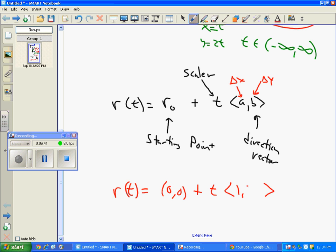This is called the vector form of a line. It's going to be very handy tomorrow when we go into lines in 3D. I hope you did well in your quiz today.